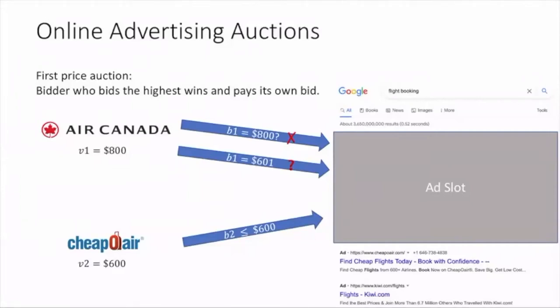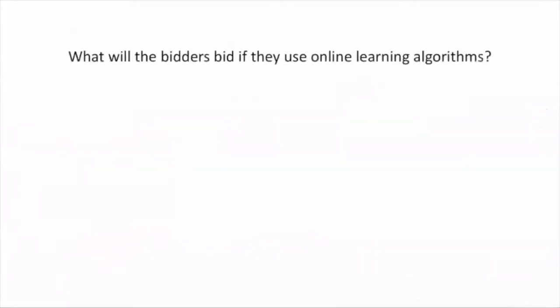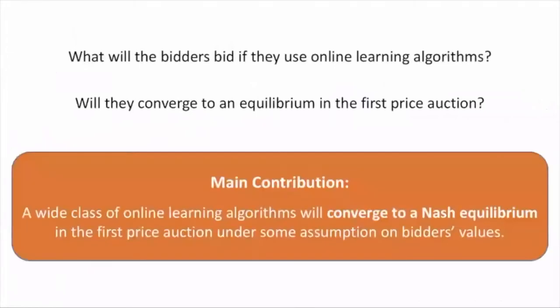What happens in reality is that advertisers may use online learning algorithms to learn to bid. Will they converge to an equilibrium in the first price auction? Our main contribution in this paper is showing that a wide class of online learning algorithms will converge to a Nash equilibrium under some assumption on bidder's values.